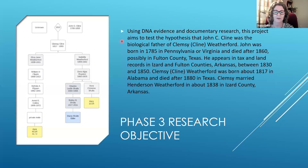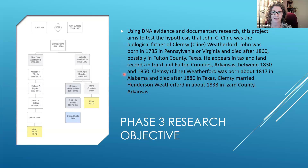Here is my phase three objective: using DNA evidence and documentary research, this project aims to test the hypothesis that John C. Klein was the biological father of Clemsie Klein Weatherford. John was born in 1785 in Pennsylvania or Virginia and died after 1860, possibly in Fulton County, Texas. He appears in tax and land records in Izzard and Fulton counties, Arkansas, between 1830 and 1850. Clemsie Klein Weatherford was born about 1817 in Alabama and died after 1880 in Texas, and she married Henderson Weatherford in about 1838 in Izzard County, Arkansas.